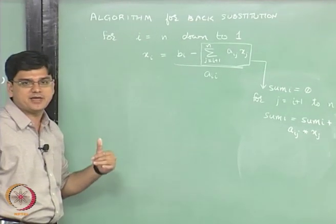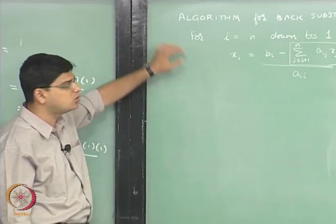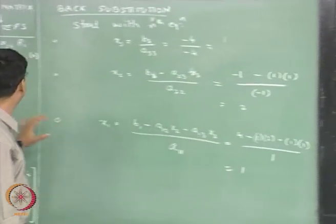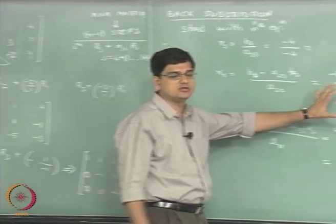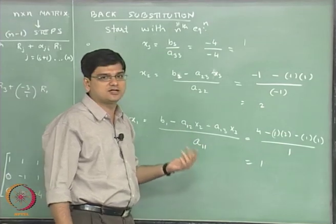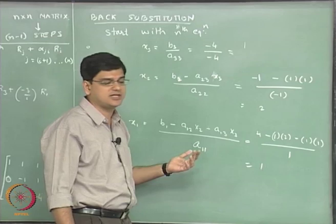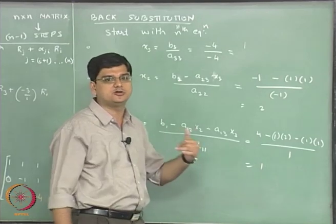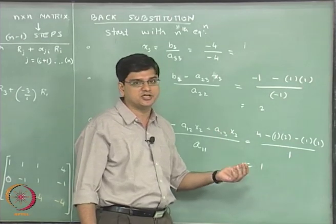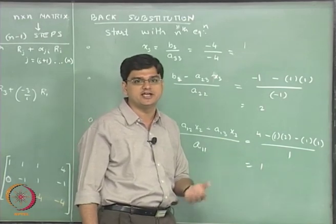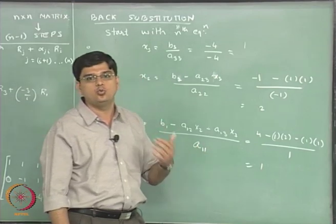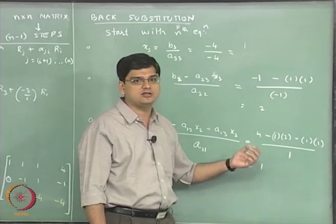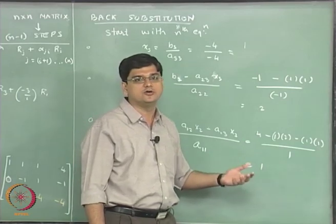In the next lecture, I will take up an Excel example using Microsoft Excel to show exactly how we do the Gauss elimination step and the back substitution step. Next, I will talk about two other methods: the Gauss-Jordan method and the LU decomposition method. I will use this example to show how they differ, and also figure out how much computational effort Gauss elimination requires and where LU decomposition and Gauss-Jordan find practical applications.